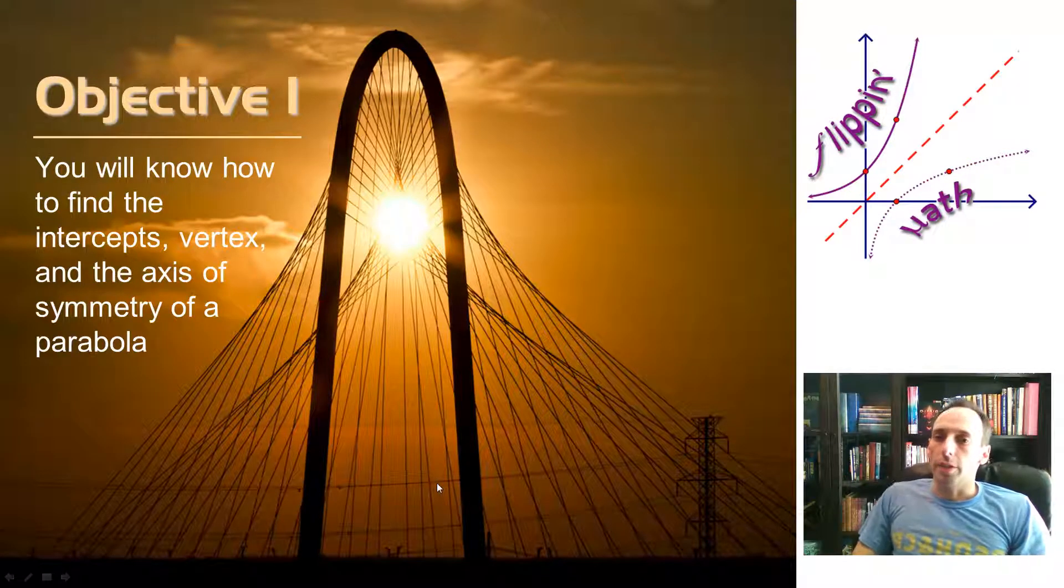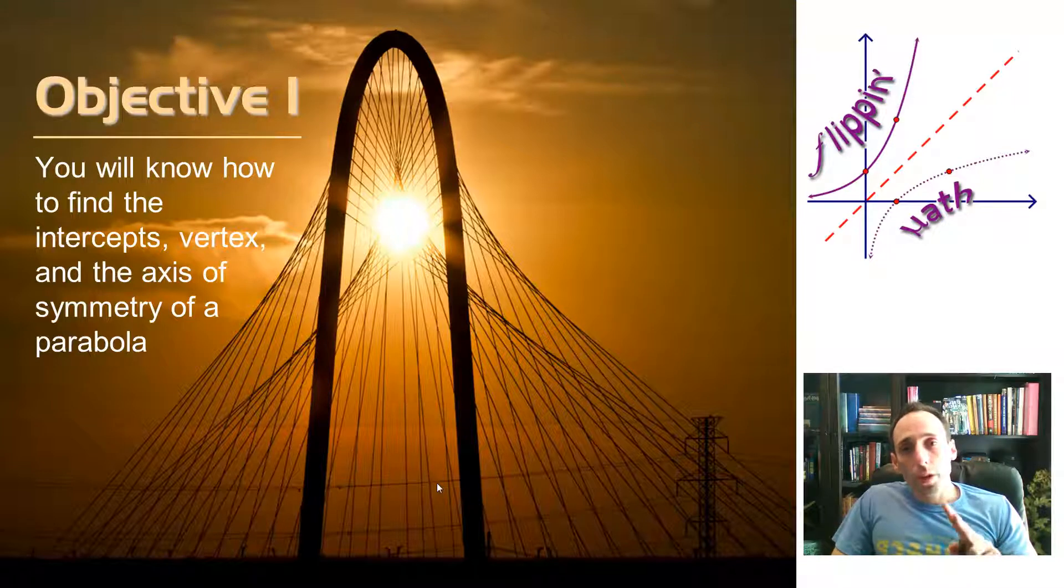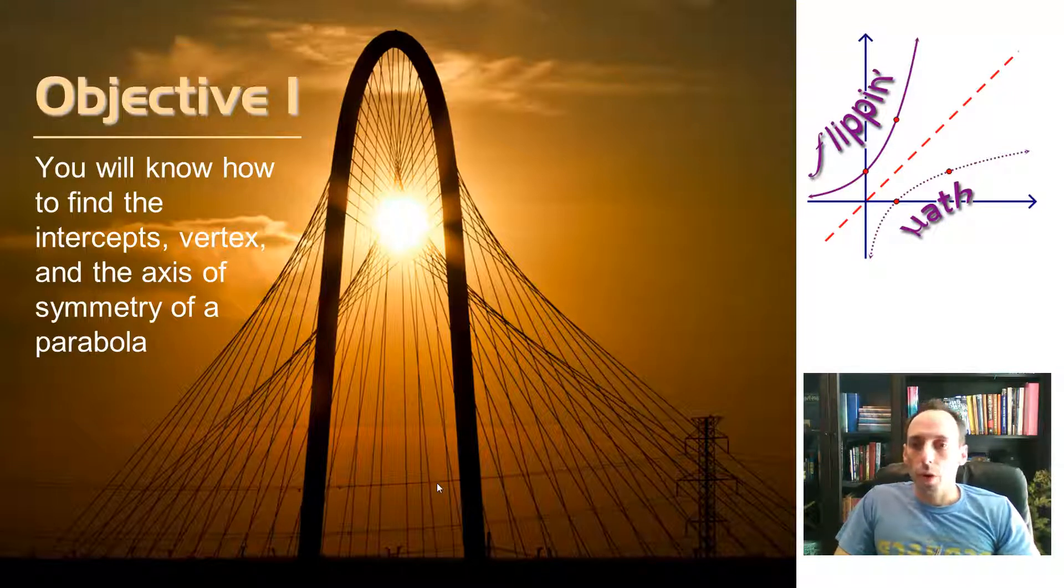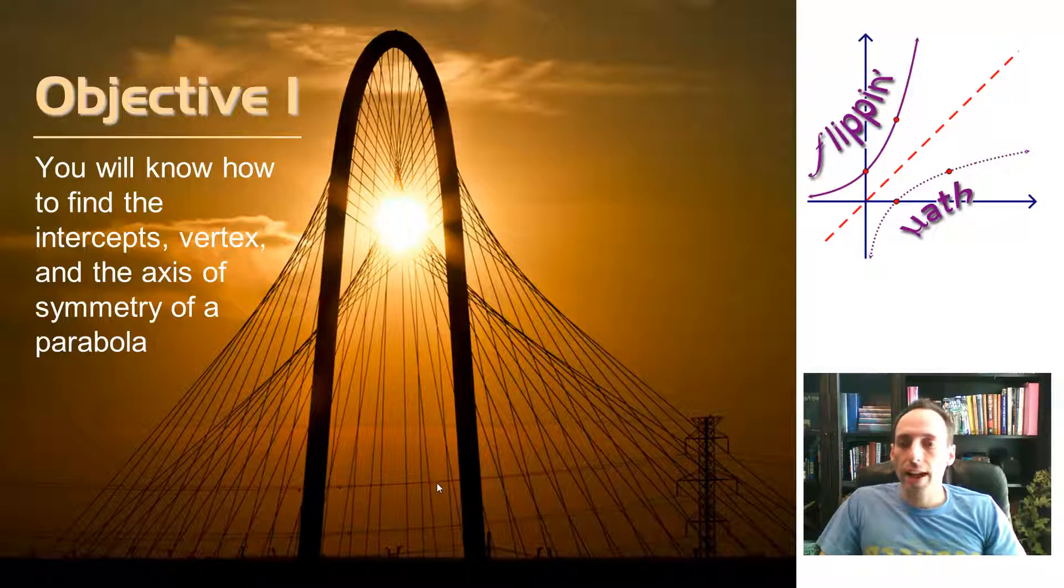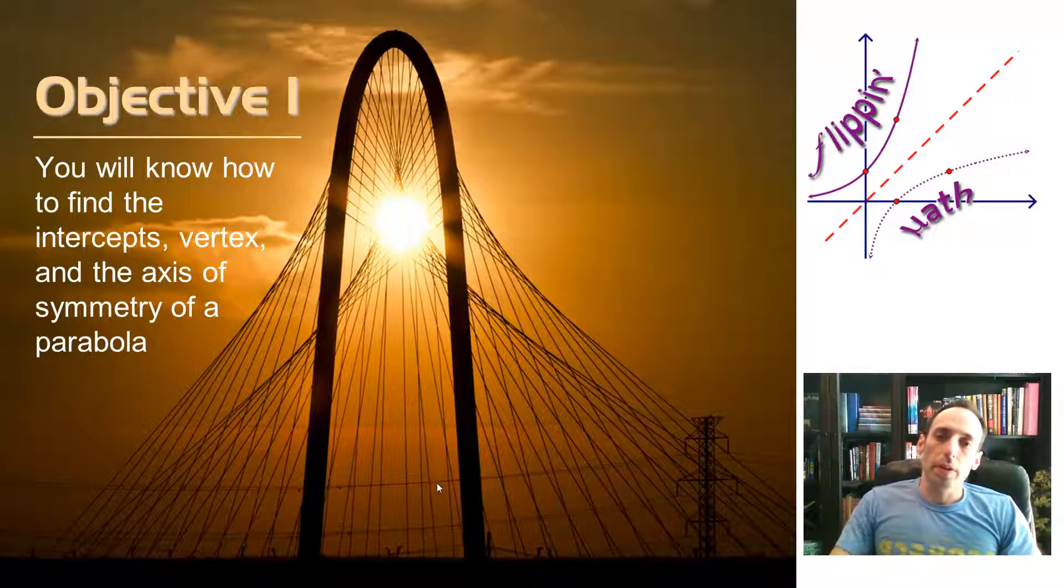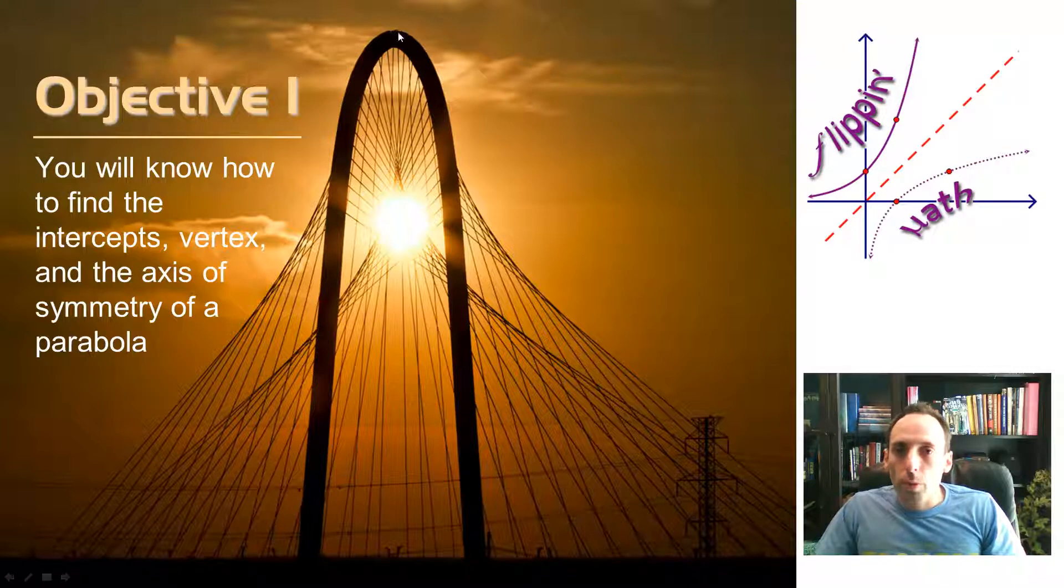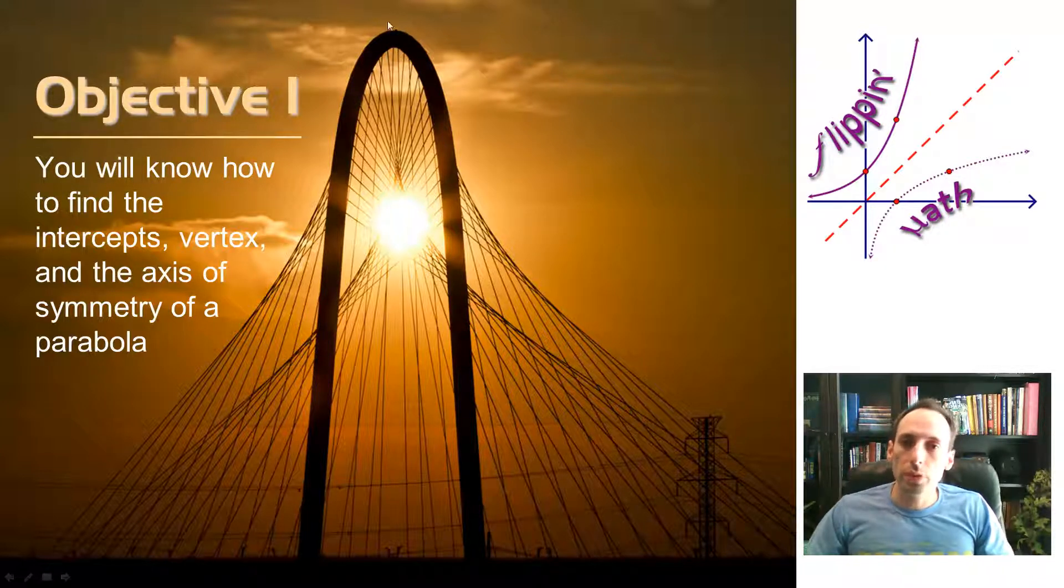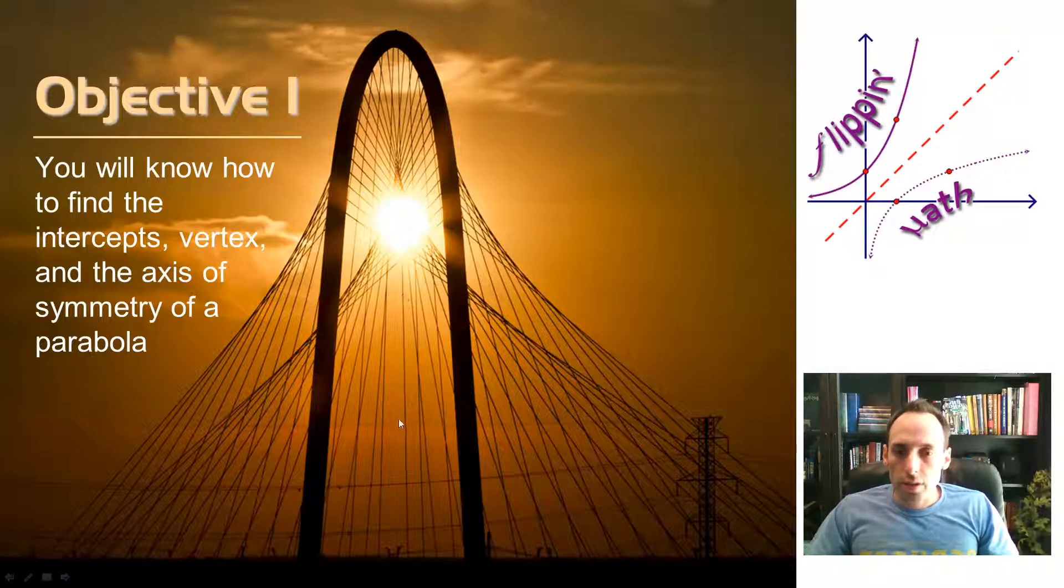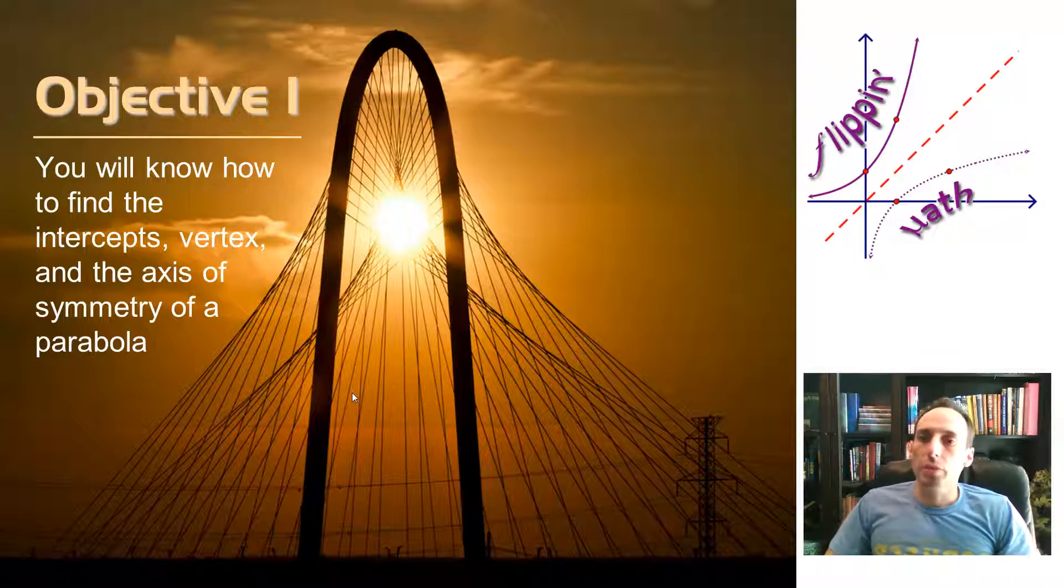So on to our first objective. You're going to be able to find the intercepts, the x and the y-intercepts of a quadratic equation, find the vertex point and the axis of symmetry of the parabola. I chose this picture because it displays a parabola in the shape of a bridge, and of course the vertex point is right up here at the top. It's the maximum point on this one, and you can imagine a line that just cuts this thing down the middle. It's very symmetrical - same on the left side as it is on the right side.